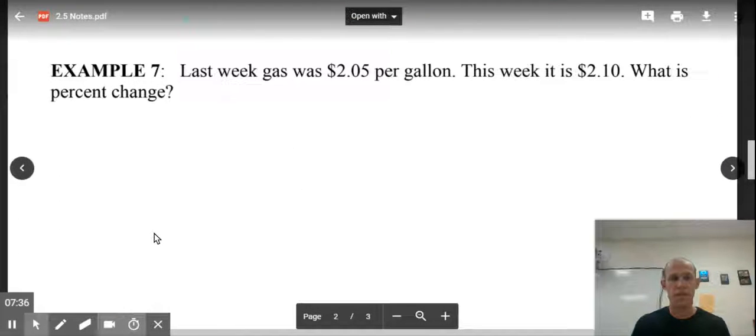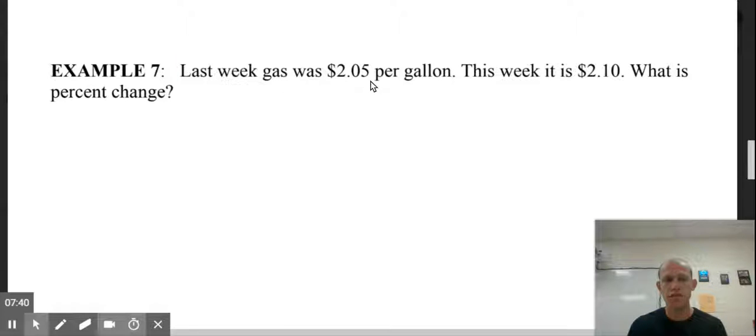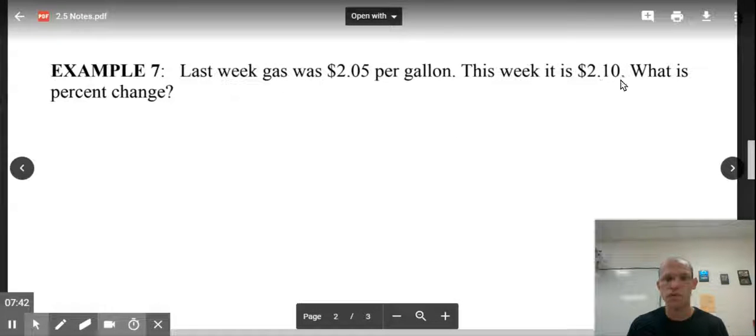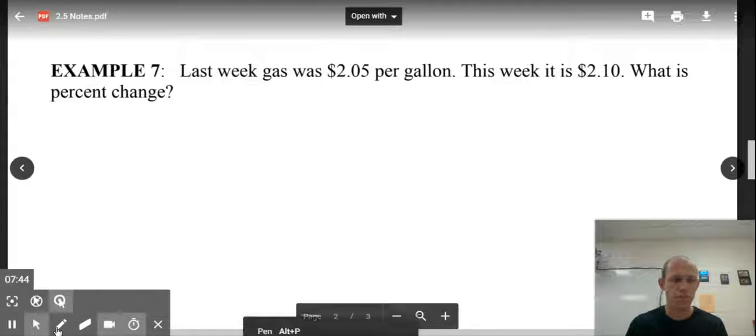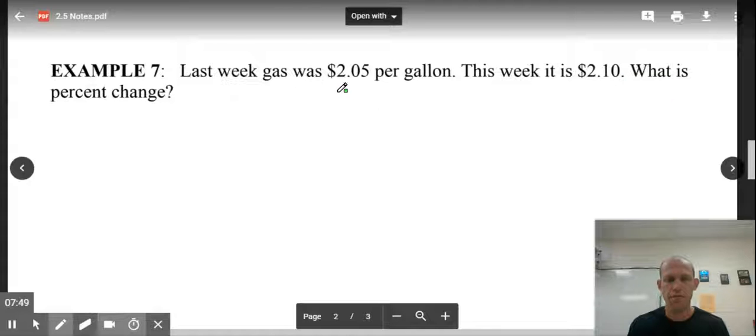Gas is another one we can think about. It's a money example again. Last week, gas was $2.05. This week, it's $2.10. What was the change? So $2.05 to $2.10 is a $0.05 change. The original was last week. So $2.05 is our original.